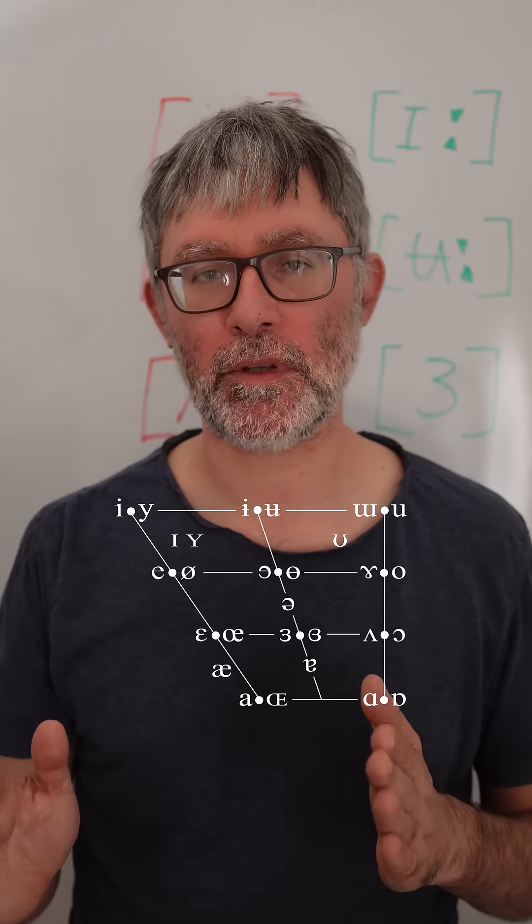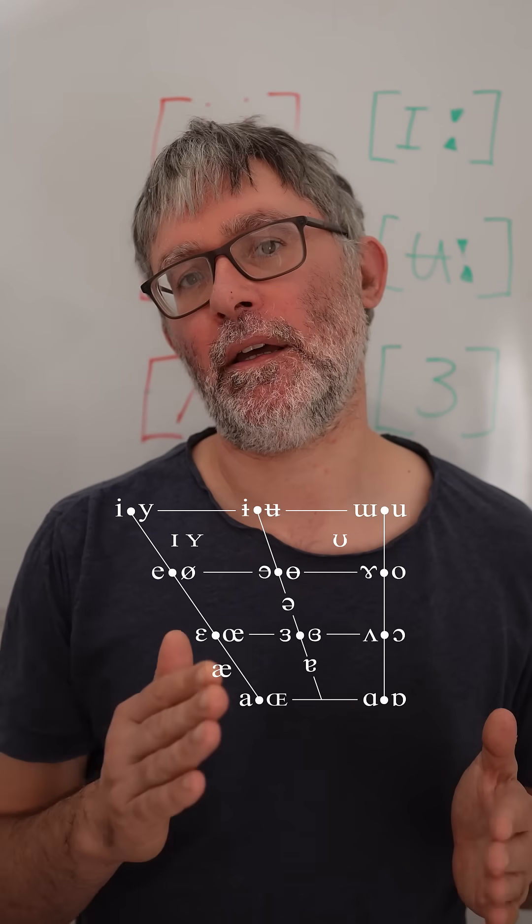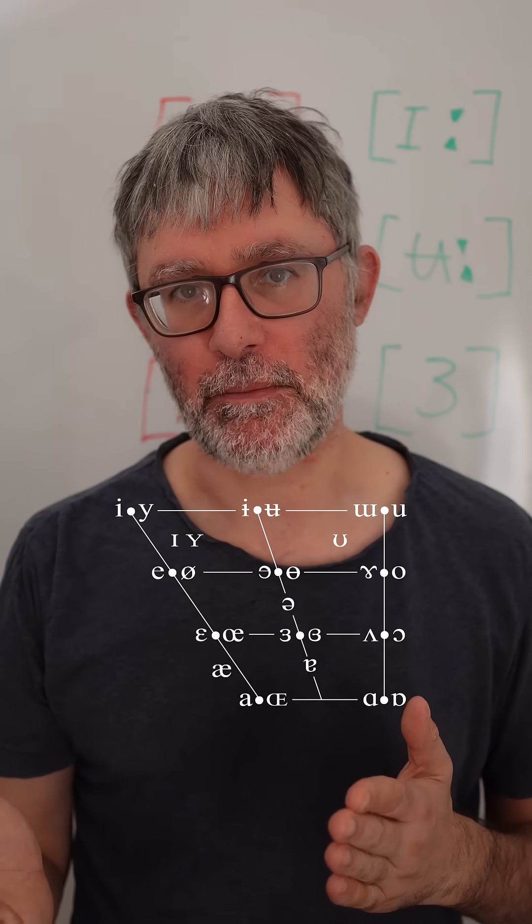So you can see that when there's two symbols, the one on the left is unrounded and the one on the right is made with rounded lips.